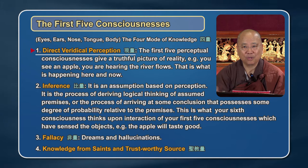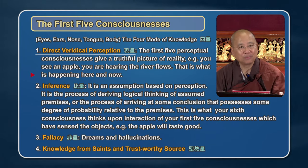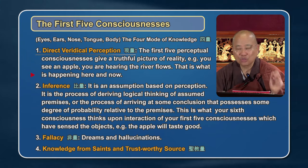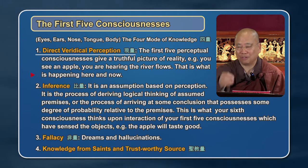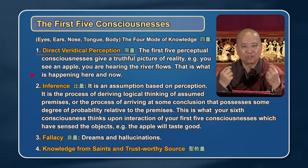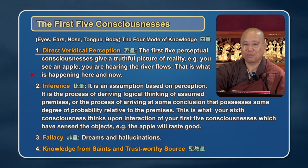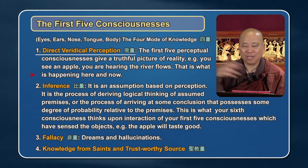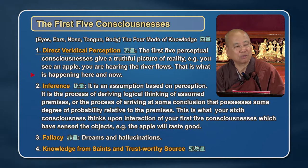There are three — actually four — ways of knowing. The first is direct veridical perception. The first five perceptual consciousnesses give a truthful picture of reality: you see an apple, you hear the river flow — that's what's happening here and now. It is direct, immediate, truthful, verifiable, actual fact. What you see now is really what exists. That's the reality. If I see that PowerPoint, I can't say I don't see it — that's direct veridical perception.